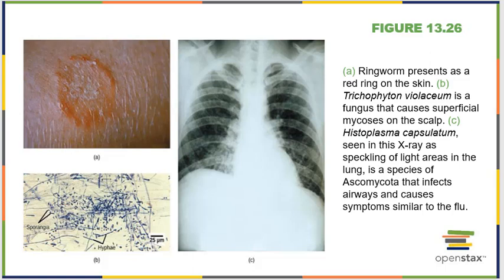There are also fungal infections in human beings. Here you can see a ringworm infection. There is also a fungus that can grow on your scalp — it looks a little like dandruff but grows in thick mats rather than just flaky skin. And there is a fungal infection from an Ascomycota species that can grow in human beings' lungs, where you might think you have the flu but actually have a fungus growing in your lungs.